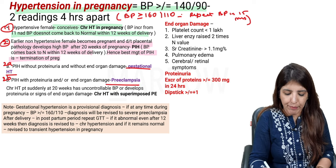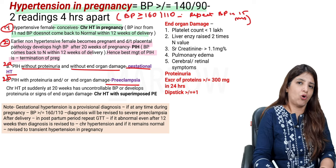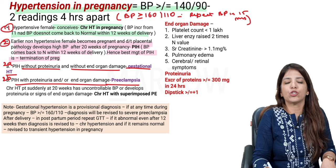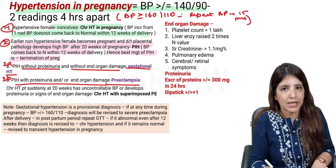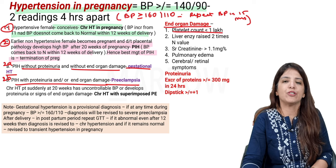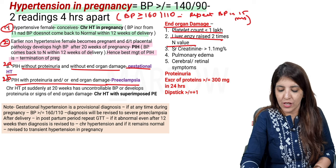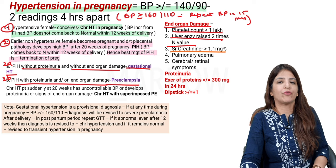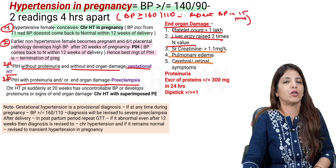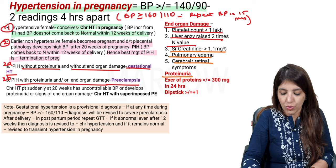PIH can further be divided into gestational hypertension or preeclampsia. Gestational hypertension means PIH without proteinuria and without end organ damage. Whereas if either proteinuria or end organ damage are present in a case of PIH, that will be called preeclampsia. End organ damage includes: platelet count less than one lakh, liver enzymes raised to two times normal, serum creatinine more than or equal to 1.1 mg%, pulmonary edema, or cerebral or retinal symptoms.